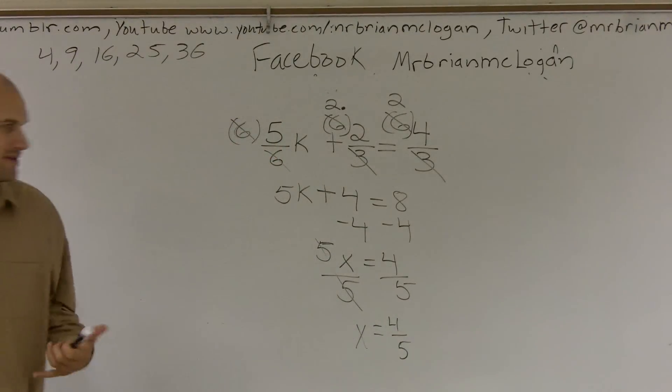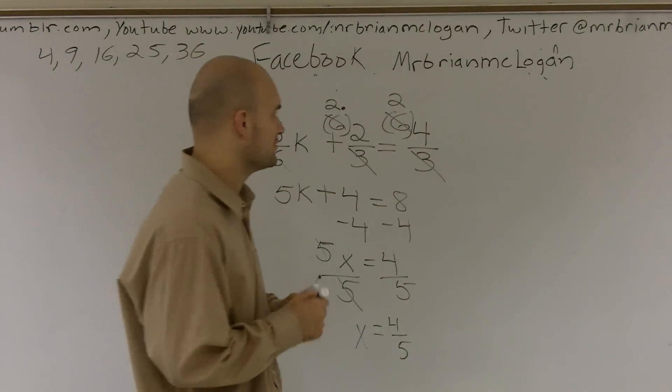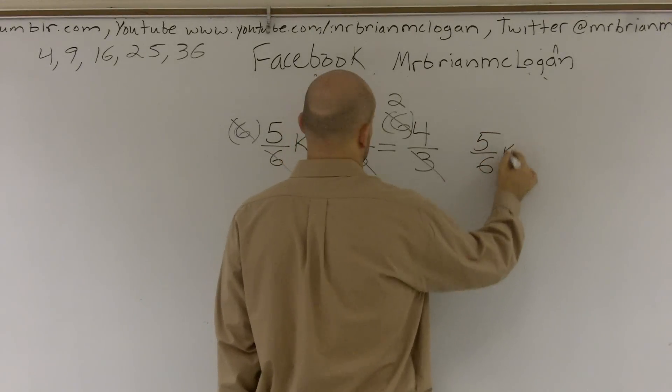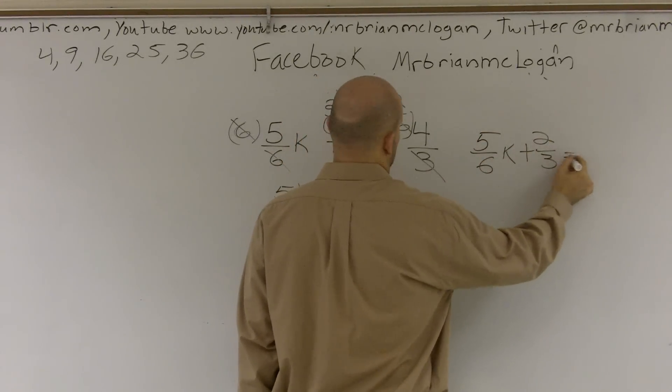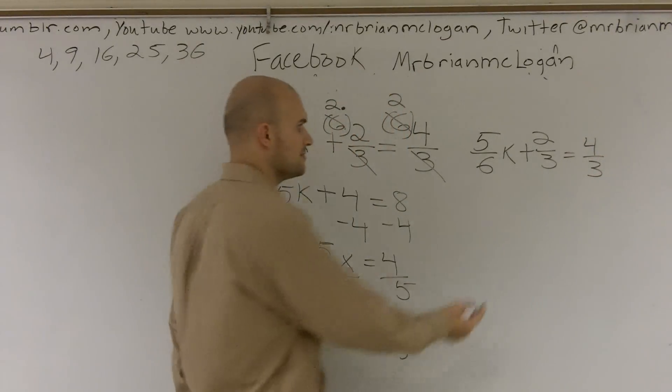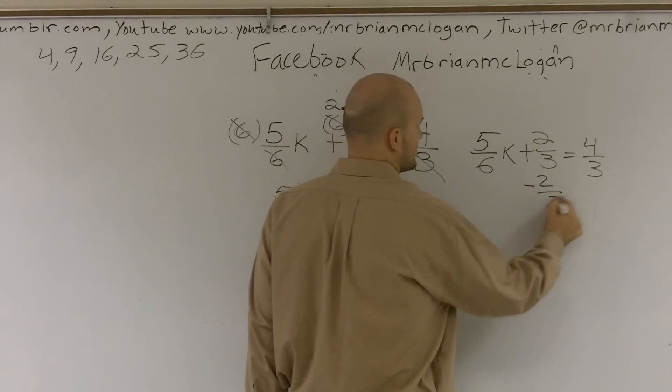Now, let's say you don't think about that or maybe that's something that's still kind of giving you a little bit of difficulty. We can still do it using fractions. And the way that we do it is just treat them like regular numbers. Subtract 2 thirds on both sides.